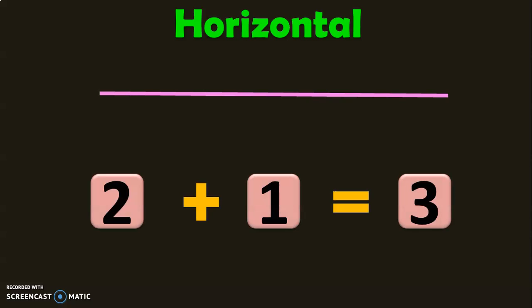Horizontal means a sleeping line. In this type of addition, the numbers are written side-by-side and added in a horizontal manner. For example, 2 plus 1 equals 3. The answer is written after the equal to sign. I will tell you how to add without the usage of objects as we go into the details of this video.